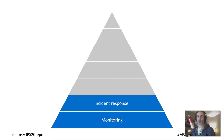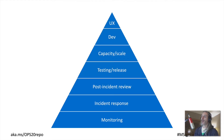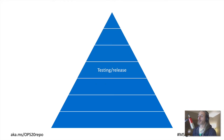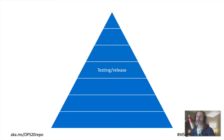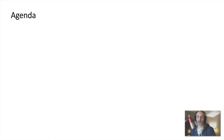When that alert takes place, there must be some sort of coordinated response for engineers to deal with the issue, understand what's going on, and do something about it. Then we get to learn from those incidents in a post-incident review, which takes us to our testing and releasing phase where we really focus on how we can improve reliability through how we deploy our software.